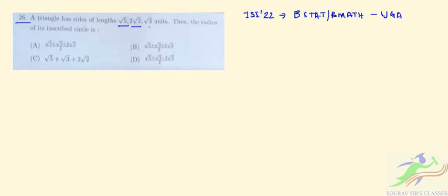Then the radius of its inscribed circle is, so from here you can see that we can give this root 5 square. If we take this root 5 square plus root 3 square, so it will be 8, which is nothing but 2 root 2 square.